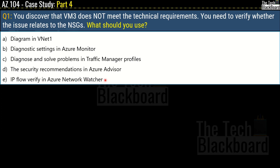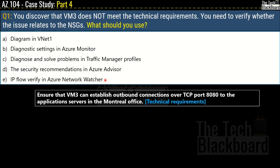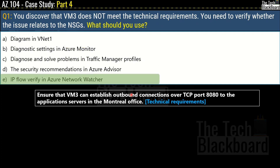The relevant technical requirement is that VM3 must establish outbound connections over TCP port 8080 to application servers in the Montreal office. VM3 is not able to meet this requirement, and we need to figure out whether this issue relates to NSGs or not. The best way to do that is to use IP flow verify in Azure Network Watcher.